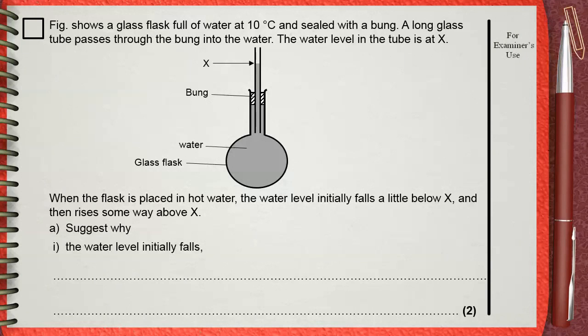Figure shows a glass flask full of water at 10 degrees Celsius and sealed with a bung. A long glass tube passes through the bung into the water. The water level in the tube is at x.